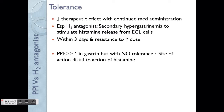Proton pump inhibitors, on the other hand, have much less tolerance effect. This is why PPI is used for Zollinger-Ellison syndrome, as mentioned in Part A — because there is less likelihood of developing tolerance. PPI acts on the final step of proton secretion into the stomach, so whatever changes occur upstream — changes in histamine release and so on — do not affect the final effect of PPI. As long as you block the final gate, whatever happens earlier does not matter.